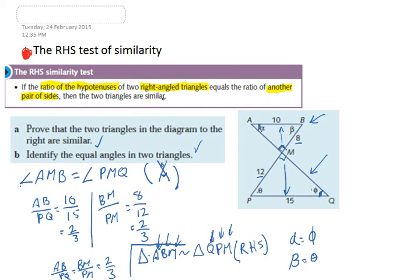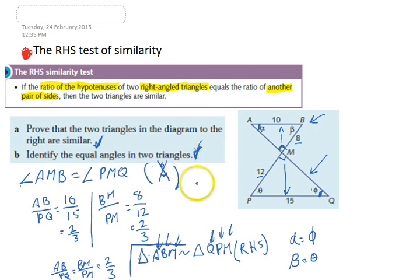Now that you've got your four tests of similarity, you're going to get a bunch of questions where you can use those tests to prove that triangles are similar, identify equal angles, find unknown sides, and a whole bunch of other things as well. Okay, let's get started.